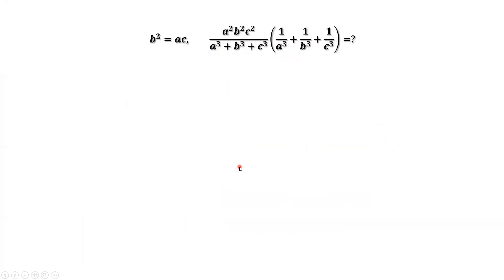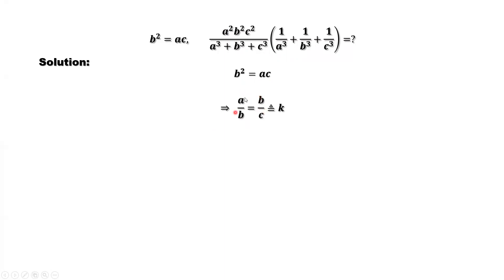Here is the detail. This is the given condition: b squared equals a times c. It is equivalent to a over b equals b over c. Why? Look at this equation here. We consider cross multiplication. We have b times b, which gives b squared equals a times c. Because a over b equals b over c, they have the same ratio.